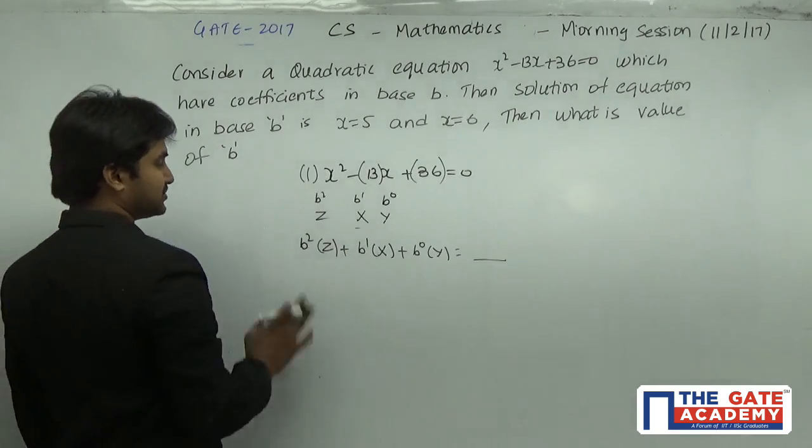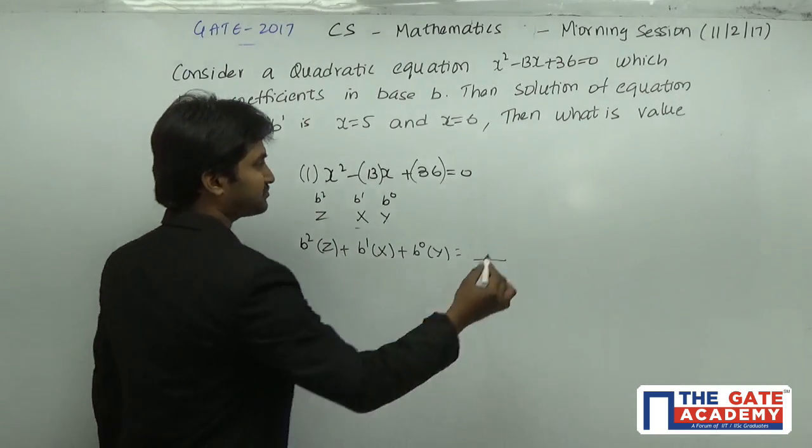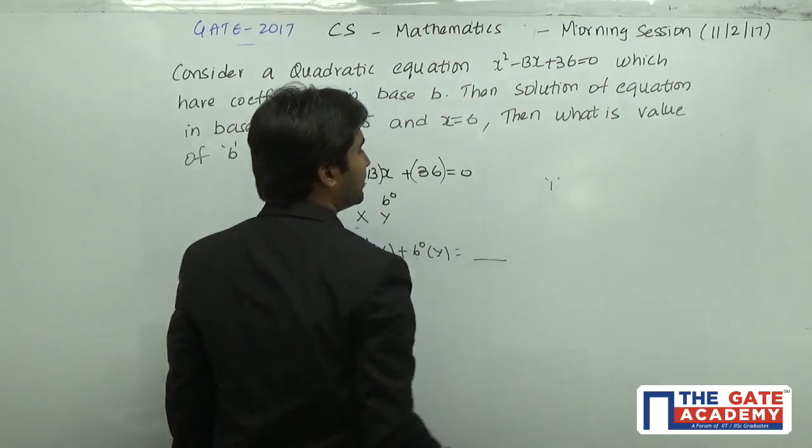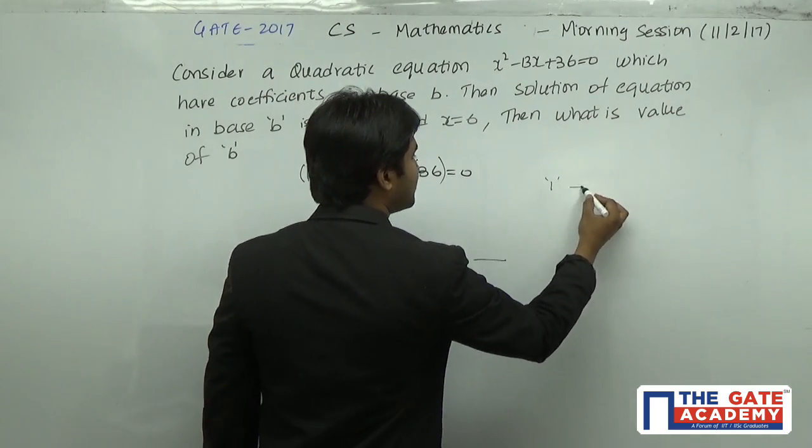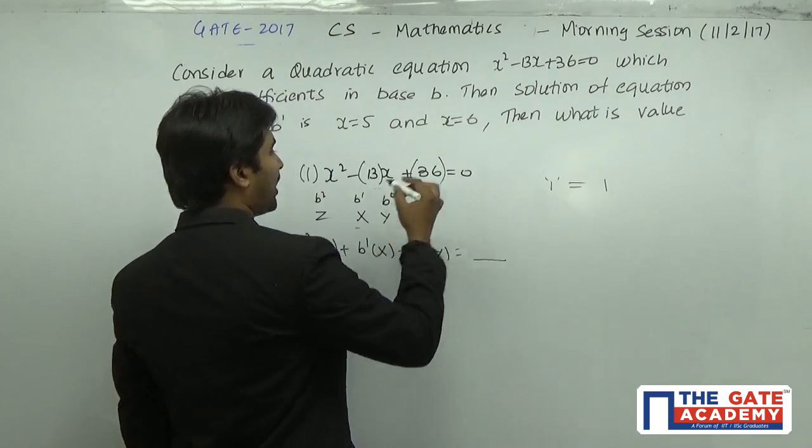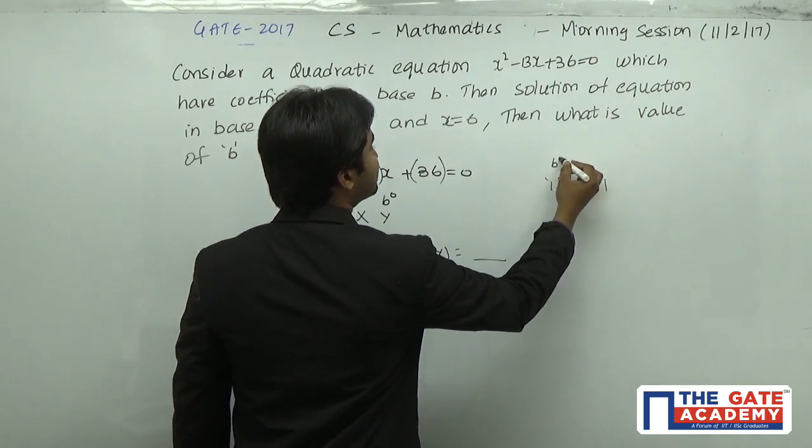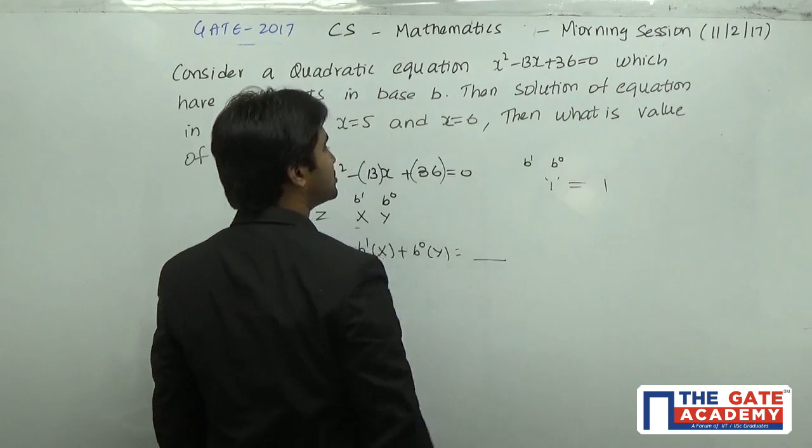Now there are three numbers. First number is 1. So 1 can be written in decimal as equal to 1 itself. If you have the basis B, you have B⁰, B¹, B², and so on.